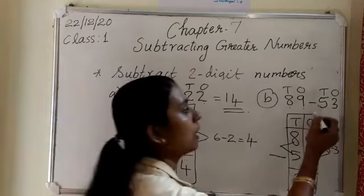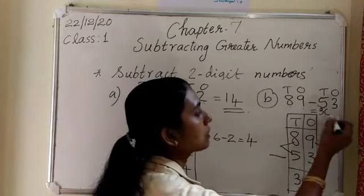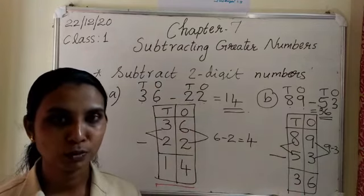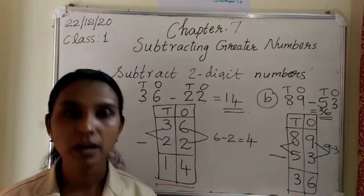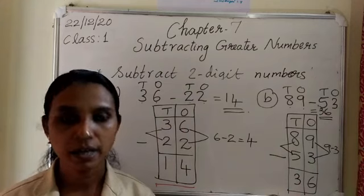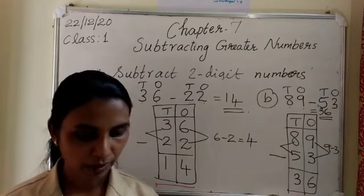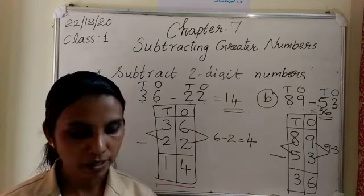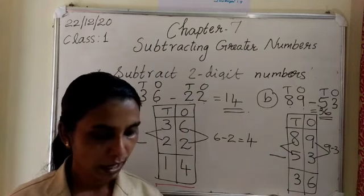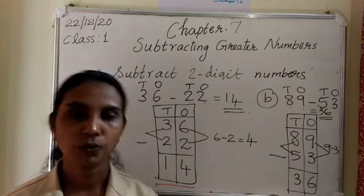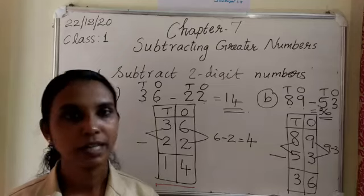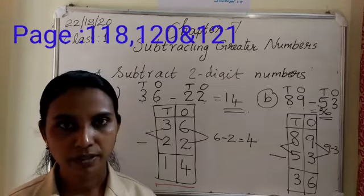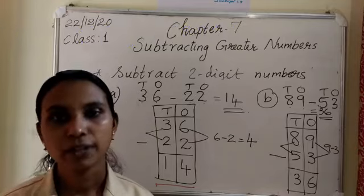I hope you all have understood how to subtract two 2-digit numbers. Then you can do your textbook exercise page number 120, and also page numbers 121 and 122. You have completed your textbook chapter 7. Today's class is over. Thank you.